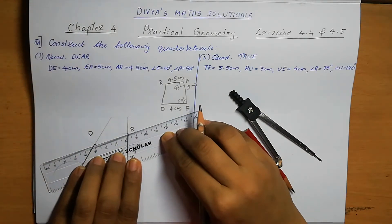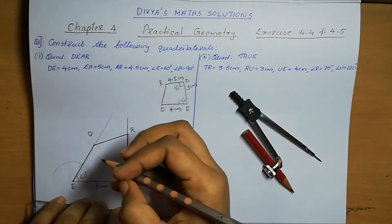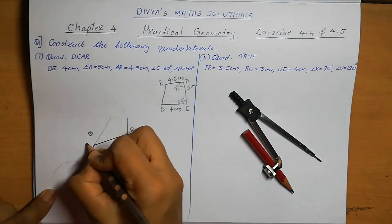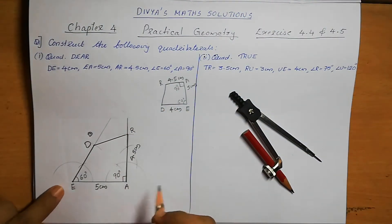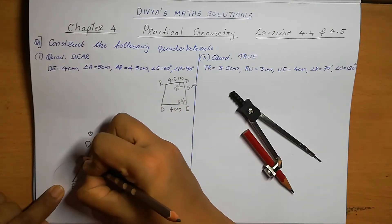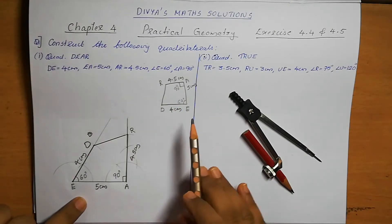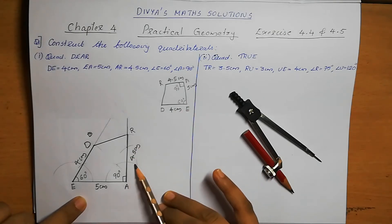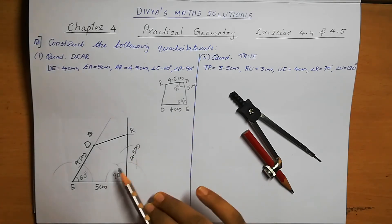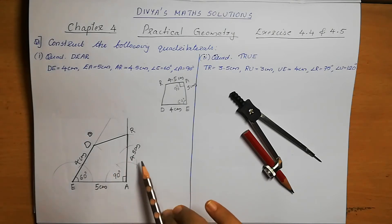Now we can join D to R. DE is 4 cm, AE is 5 cm, AR is 4.5 cm, and two angles are also marked. We have got the quadrilateral DEAR.